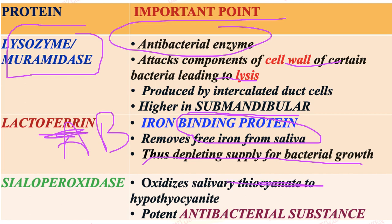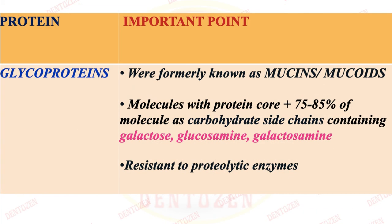Next is salivary peroxidase, which is also an anti-bacterial substance. It converts salivary thiocyanates into hypothiocyanates. Other important proteins are glycoproteins — glyco means carbohydrates side chains are present. These molecules have a protein core, and 75 to 85% of the molecule is made from carbohydrates in side chains, which can be galactose, glucosamine, or galactosamine. These glycoproteins are resistant to proteolytic enzymes.